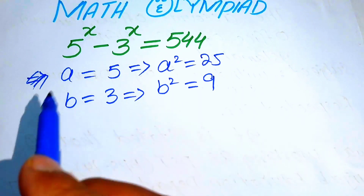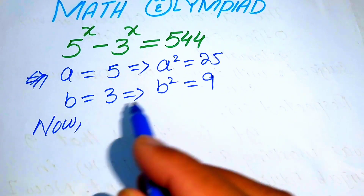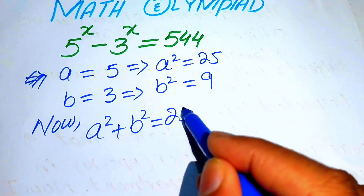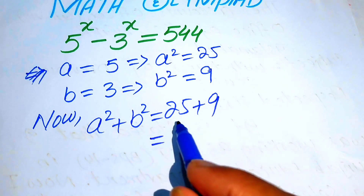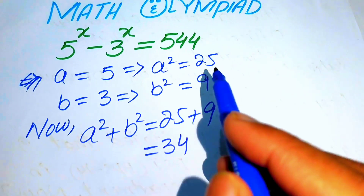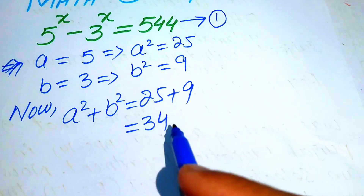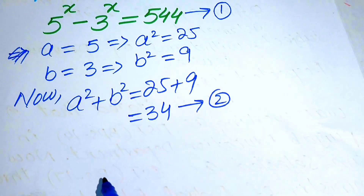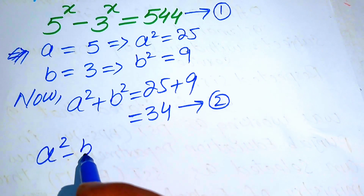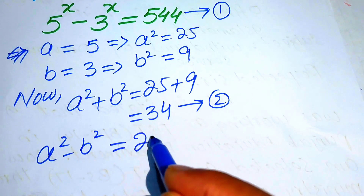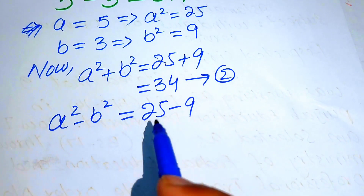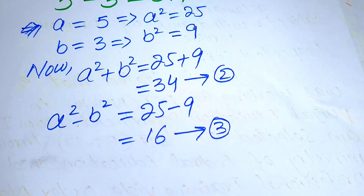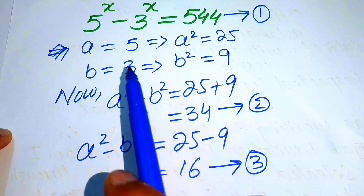We add the two squared values and obtain a squared plus b squared equals 25 plus 9 equals 34 — we call this equation number 2. Then we subtract: a squared minus b squared equals 25 minus 9 equals 16 — we call this equation number 3.